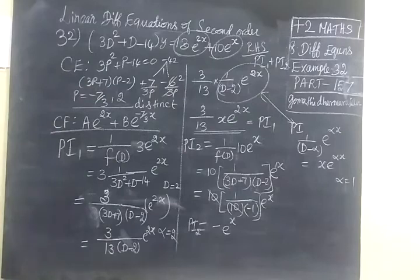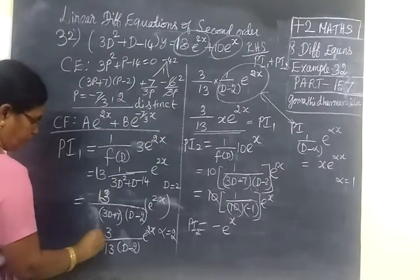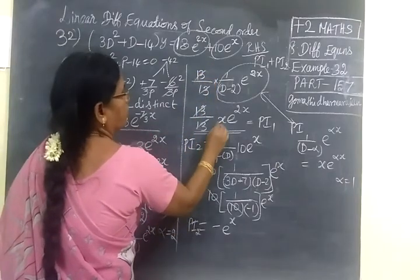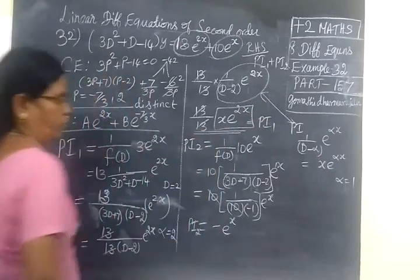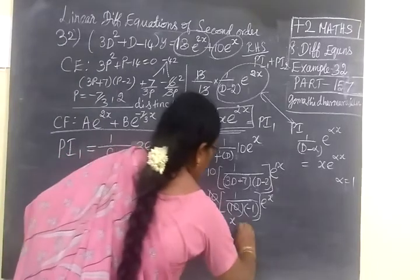Now check the answer for PI1, PI2. Question number 32. First is 3/13 times x·e^(2x). The 13 is in the numerator, so 13 cancel. That's only x·e^(2x). Then for PI2, minus e^s. That is correct. So this one is correct.